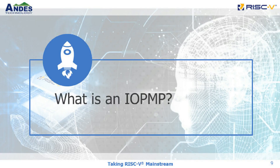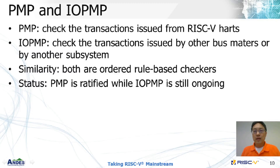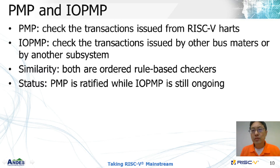So, what is an IOPMP really? As we saw in the previous slides, we need both PMP and IOPMP to cover all transactions running on a platform. PMP is for RISC-V cores and IOPMP is for the other bus masters. They basically do the permission check in a similar way, one rule by one rule, according to the priorities. That is, it is an ordered rule-based checker.